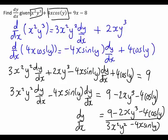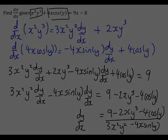The main steps are: differentiate term by term with respect to x in the original expression; use the product rule for any products, whether both functions of x, both functions of y, or a mixture as in this case; and finally rearrange to make dy/dx the subject.